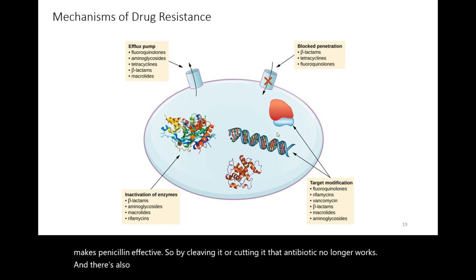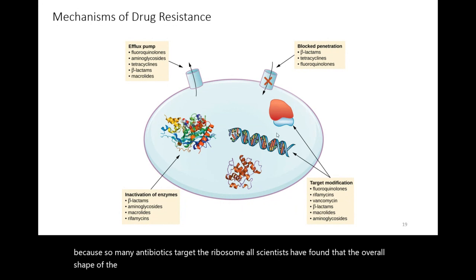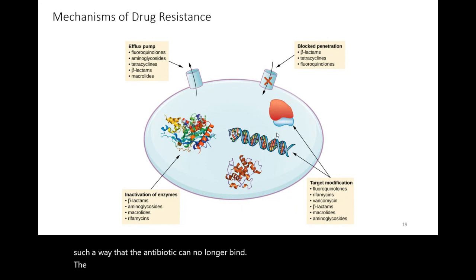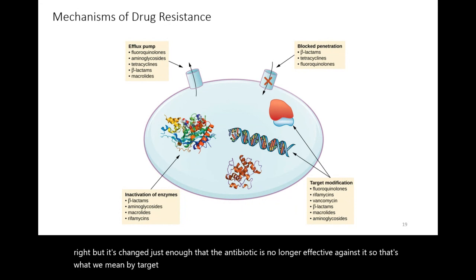There is also target modification. Because so many antibiotics target the ribosome, scientists have found that the ribosome's overall shape has gradually changed just enough that the antibiotic can no longer bind, while the ribosome still functions normally. That is what we mean by target modification. And that is the end of this video.